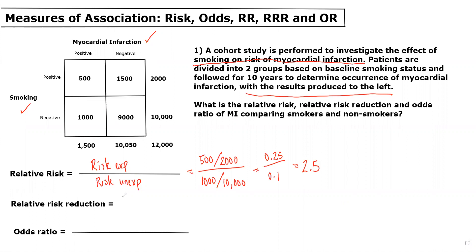Moving on to relative risk reduction, we know that this is calculated as one minus the relative risk. So you might be scratching your head here because we calculated the relative risk to be 2.5 — one minus 2.5 is a negative number, so this doesn't really make sense. I really wanted to include this example to highlight that it's great to know the formulas and know how to plug in the numbers, but at the end of the day, you really need to understand what you're calculating. We know that smokers have a higher risk of myocardial infarction, both intuitively and based on the results of this table.